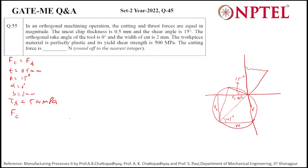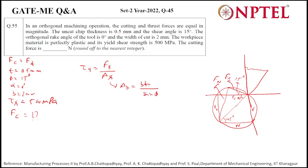Now we need to find Fc. We know that τs equals Fs divided by As, where Fs is the shear force and As is the shear area. The shear area As equals b times t divided by sin(φ). Substituting b = 2 mm, t = 0.5 mm, and sin(15°), we get As = 3.8637 mm².